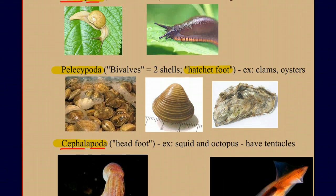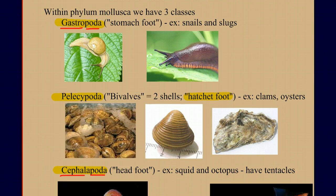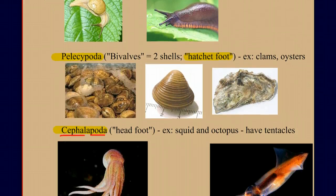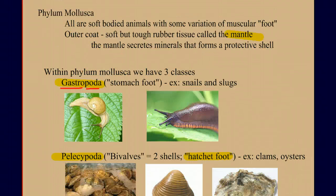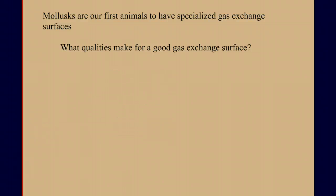Each of these groups within mollusks have distinctive traits, and we're going to try to connect physical characteristics with lifestyle traits in a case study. The other big thing to note about phylum Mollusca is that for the first time in mollusks, we're going to see a specialized gas exchange surface — some organ or structure designed to exchange oxygen for carbon dioxide — and this has some relationship with the circulatory system in order to move those gases through the body.